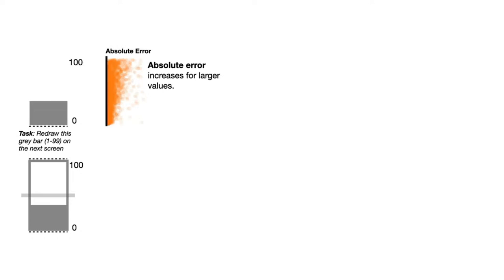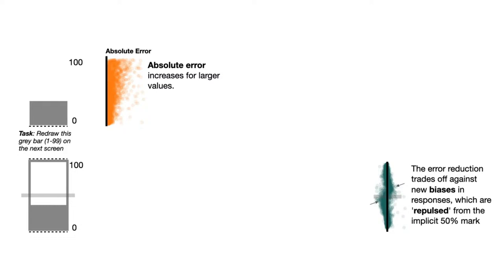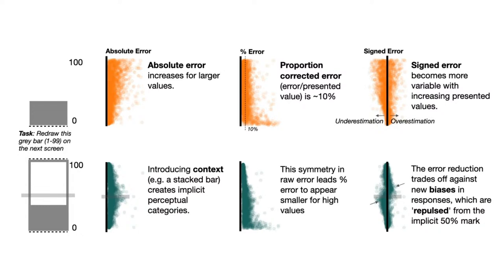We asked participants to recreate bar graphs. When the bar was alone, we saw a different pattern of error than when the bar was presented with context in a stacked bar graph. We find that absolute error increased for higher bars when presented alone. We also found a bias in responses repulsed from an implicit 50% mark. We found a magic number — 10% — to predict error. Participants are usually within 10% of the height of the bar.